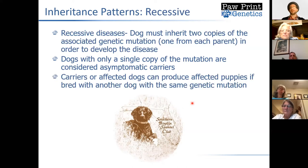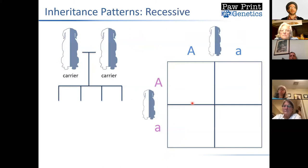By knowing whether a dog is an asymptomatic carrier, that will be very helpful in determining which direction we want to go with breeding. Carriers or affected dogs can produce affected puppies if they're bred with another dog that also has that same genetic mutation.